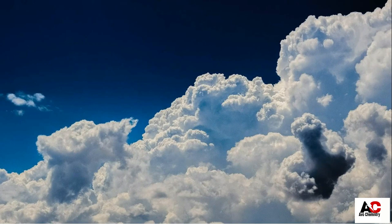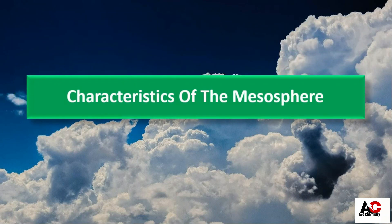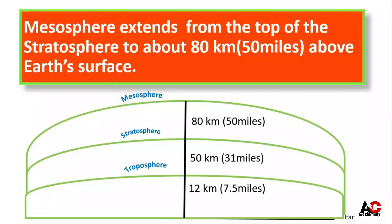What are the characteristics of the mesosphere? The mesosphere extends from the top of the stratosphere to about 80 km or 50 miles above the earth's surface. That means just after the stratosphere, at a height of 80 km or 50 miles from the earth's surface, we have the mesosphere.